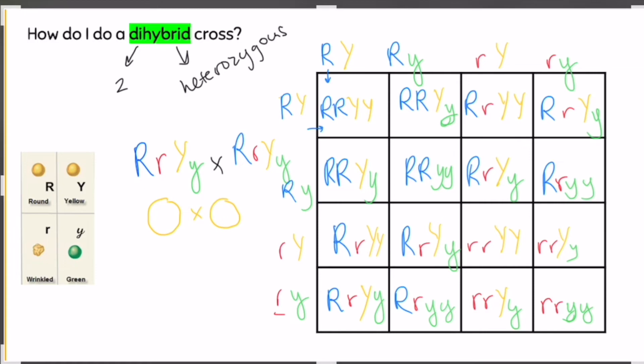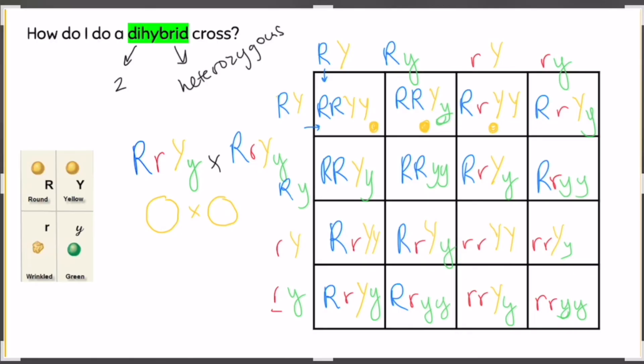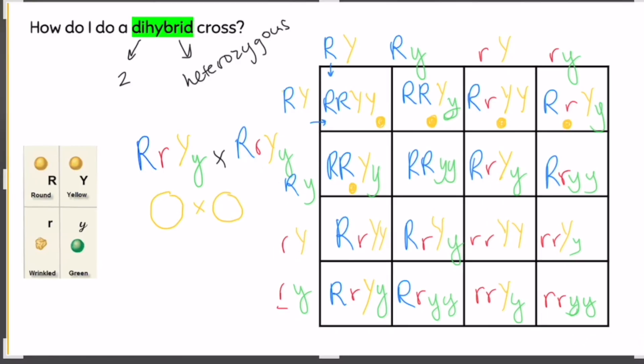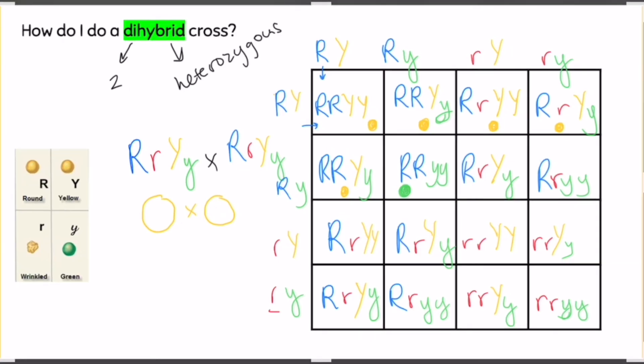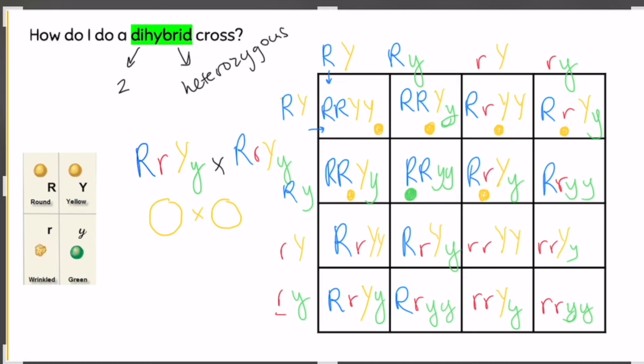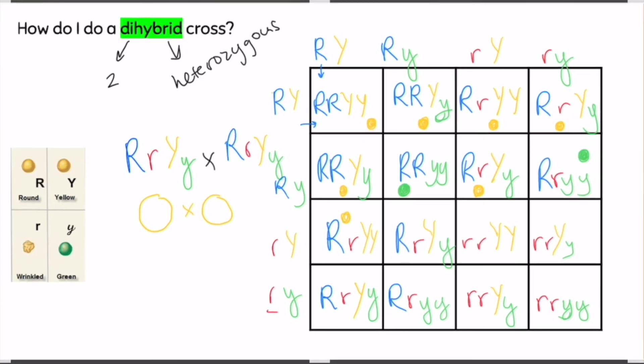And so every box that has at least one capital R and at least one capital Y is going to be round and yellow. So I'm just going to draw my little round yellow pea in each of those boxes so that I can look at my information at a glance. I'm going to try to be distinctive when I go to do the wrinkly peas so that I can really tell them apart. Maybe I'll even do a different outline. So, so far the whole top row, round and yellow. So here's my first green pea and it is still round but it has two recessive traits for color so it is green. And here is another round green pea. Back to our yellows.